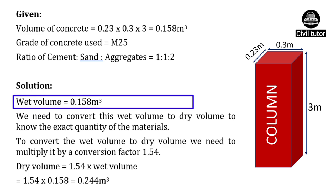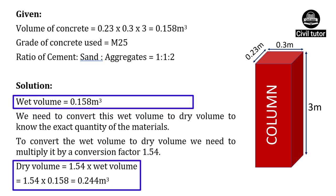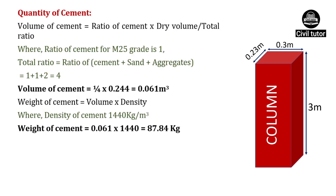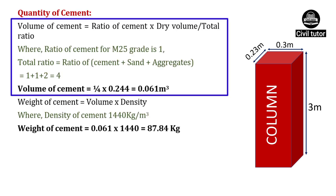We convert this wet volume to dry volume by multiplying by the conversion factor 1.54. Hence, dry volume equals 1.54 × 0.158 = 0.244 meter cube. Volume of cement equals ratio of cement upon total ratio into dry volume, i.e., 1/4 × 0.244. Substituting, volume of cement equals 0.061 meter cube.